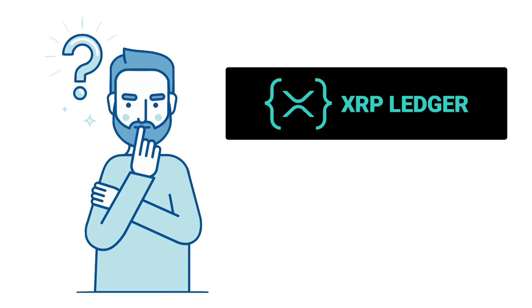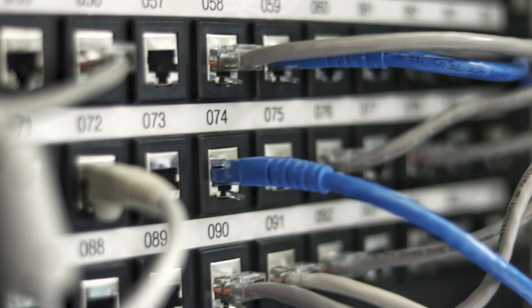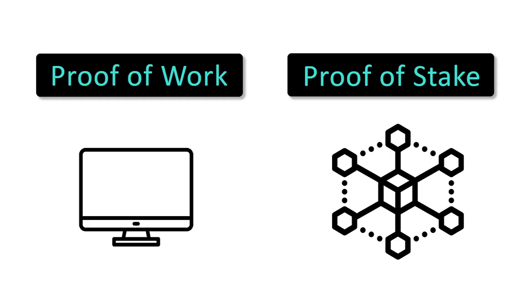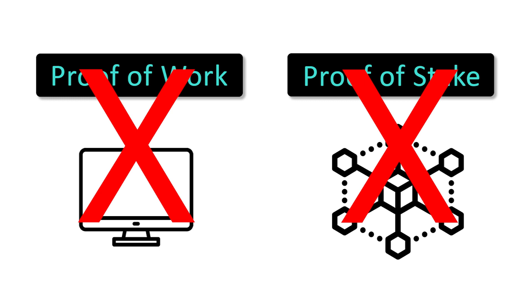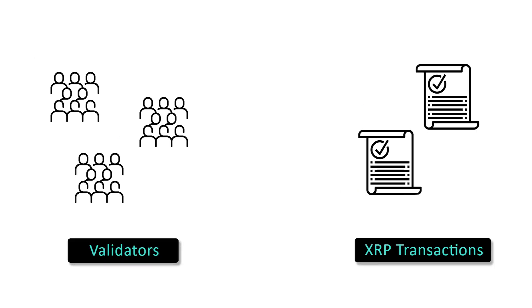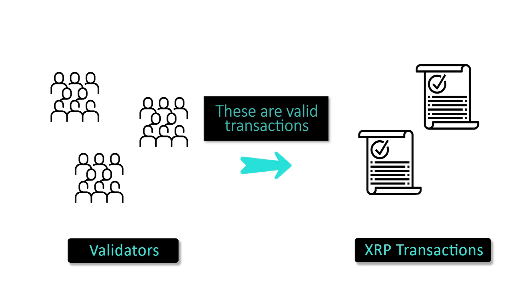So how does the XRP Ledger work? The XRP Ledger, also known as XRPL, is a decentralized public blockchain where anyone can connect their computer to the network that manages the ledger. The XRP Ledger does not use proof-of-work or proof-of-stake like many other popular blockchain networks. Instead, it uses a consensus protocol where validators validate all XRP transactions every 3 to 5 seconds.